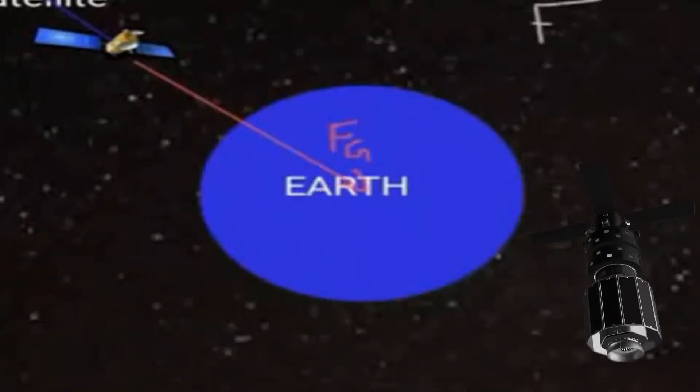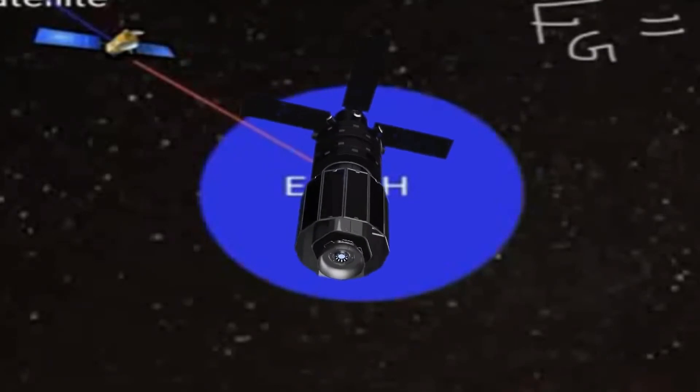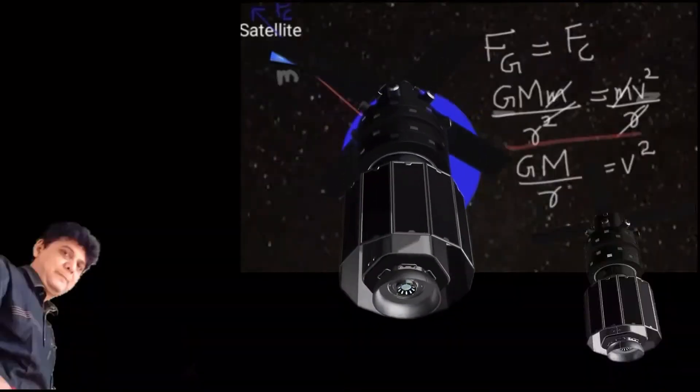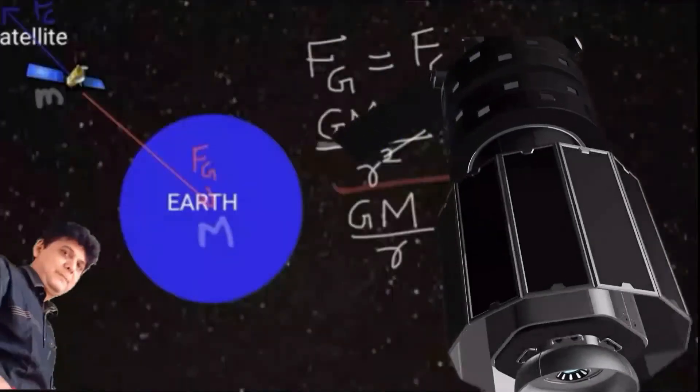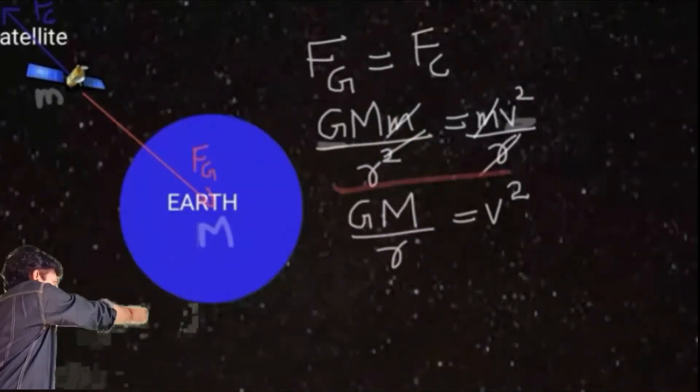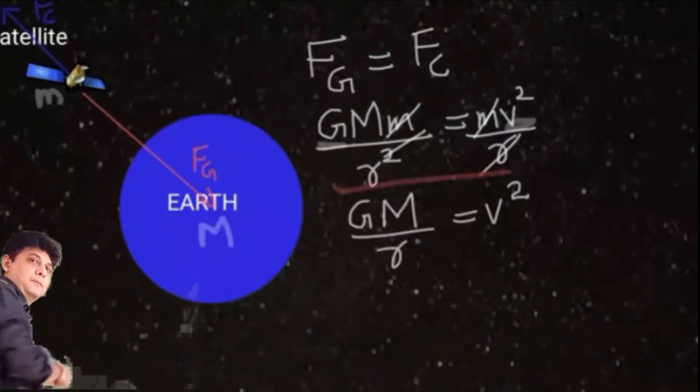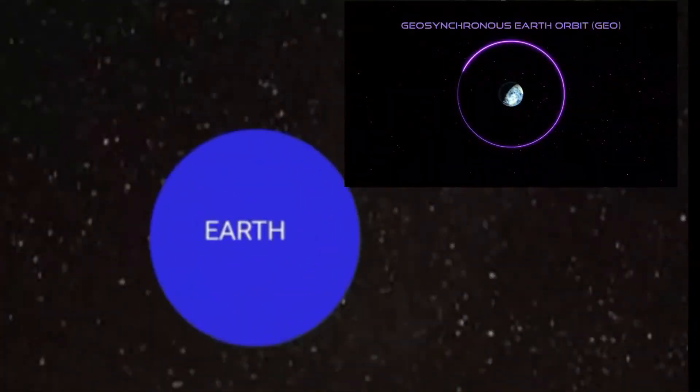are satellites in balanced positions? Why don't they fall down to the surface? The basic principle is that centripetal forces and centrifugal forces are in balance. This can be expressed with the formula: GM/r = V².